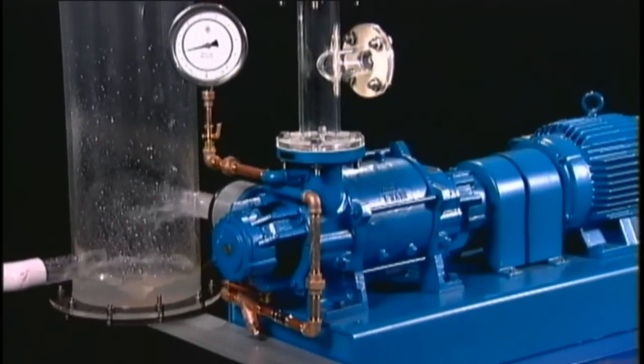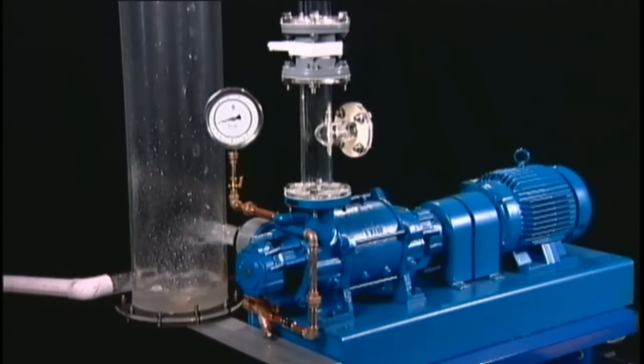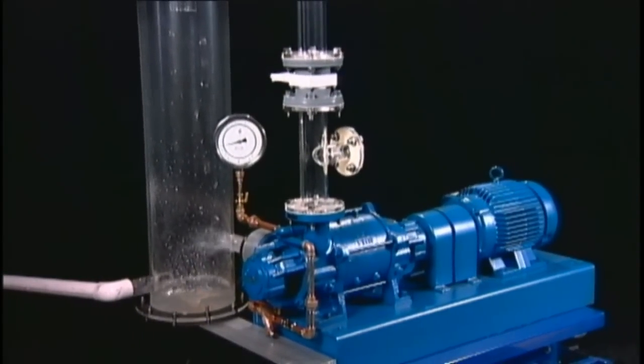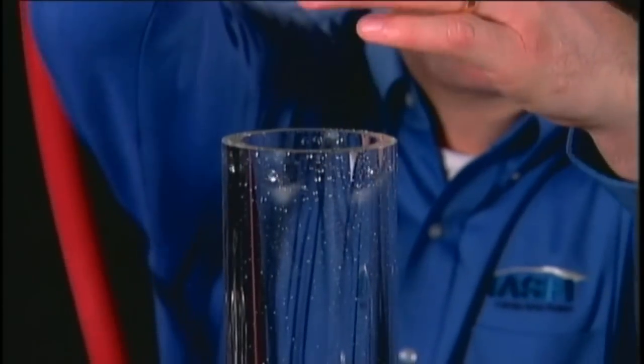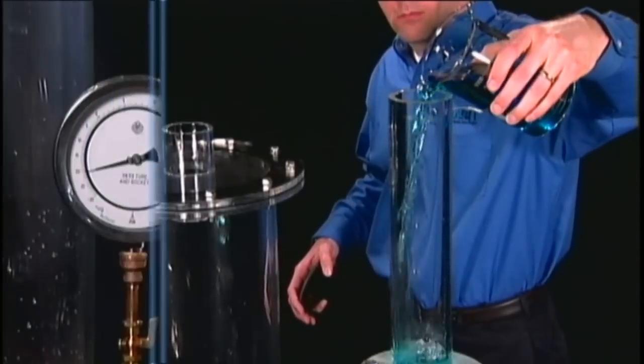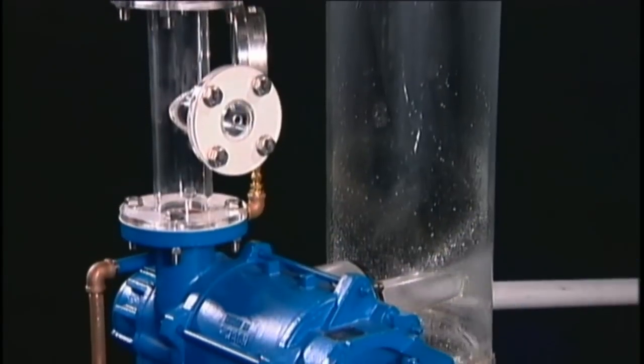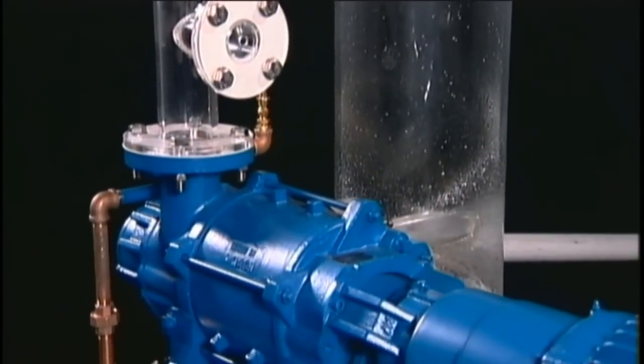This is a working vacuum system with a transparent separator and piping system that lets you see what goes in and what comes out. With this inlet tube, we will valve in just about everything you get in a process system and a few things that you don't, to show you that Nash pumps can handle them and keep on running.